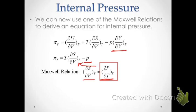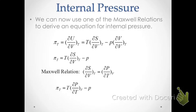Going back to our list of Maxwell relations, there is a Maxwell relationship telling us that dS/dV at constant T is actually equal to dP/dT at constant V. Making that substitution, we now have the relationship for internal pressure that we have used many times throughout the semester. We used it to show that the internal pressure of an ideal gas is zero, to derive the internal pressure for a van der Waals gas, and to calculate internal energy changes in various systems. Now you can see where it came from — this very useful Maxwell relation.